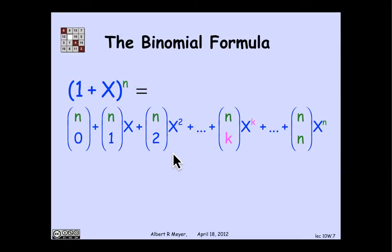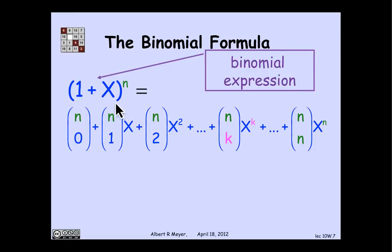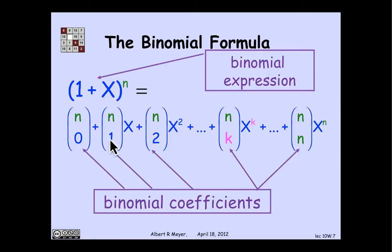This is called the binomial formula: (1 + x)ⁿ = (n choose 0) + (n choose 1)·x + (n choose 2)·x² + … + (n choose k)·xᵏ + … + (n choose n)·xⁿ. The expression (1 + x) is called a binomial expression, and the choose numbers — the number of ways to choose k out of n elements — are called binomial coefficients. This is why they carry that name.